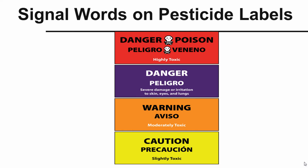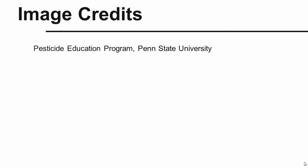So there you have it — the four groups of signal words used on pesticide labels. Make sure you understand what they mean to you; it's your first clue of what the dangers could be. After you look at that signal word, make sure you're reading the label and following any restrictions or precautions on how to use that product. Hopefully this was helpful and a good reminder to be reading those labels and following the directions. If you have any questions, please contact us at the Pesticide Education Program, Penn State University. Thank you.